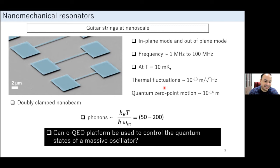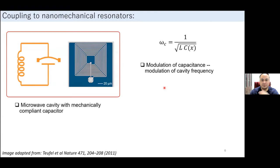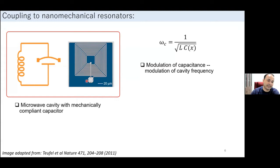The key question is whether a circuit QED platform can control these massive oscillators down to the quantum limit. One successful approach couples a mechanical resonator to microwave modes using an LC cavity with a mechanically compliant capacitor — a drum whose top plate vibrates and forms a parallel-plate capacitor shunted by an inductor. The cavity's resonant frequency is modulated by the motion of the capacitor plate.